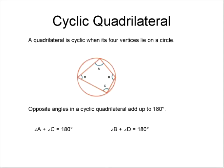The next thing we're going to look at is something called a cyclic quadrilateral. A quadrilateral is defined as being cyclic when its four vertices lie on a circle.